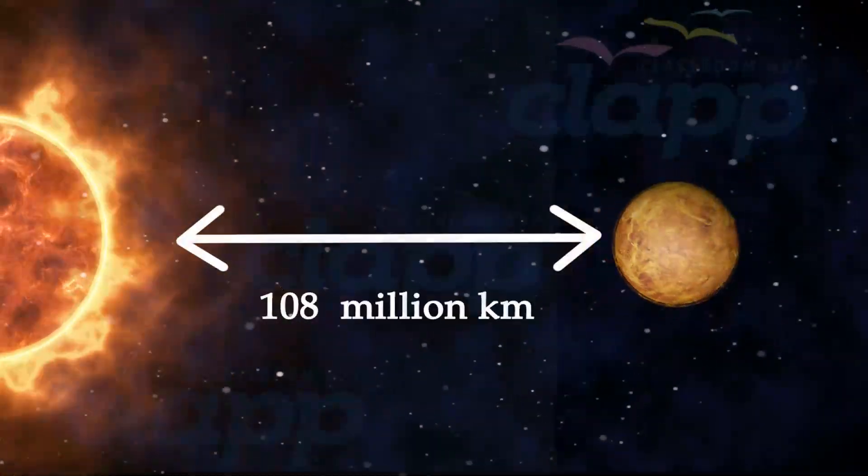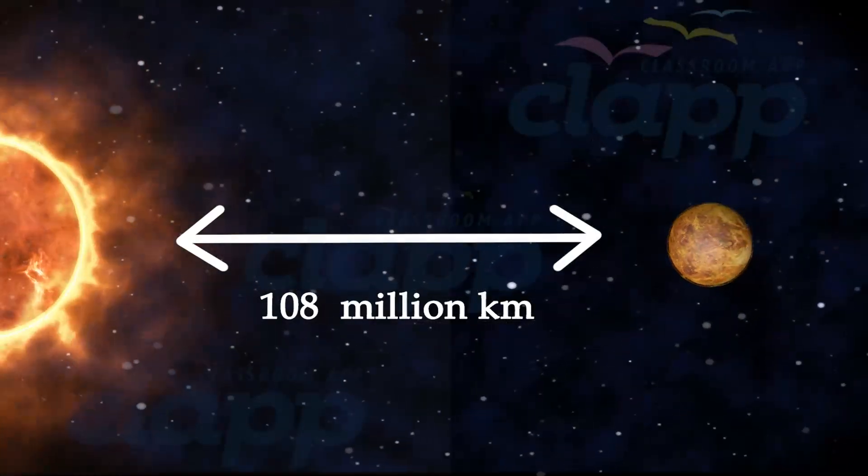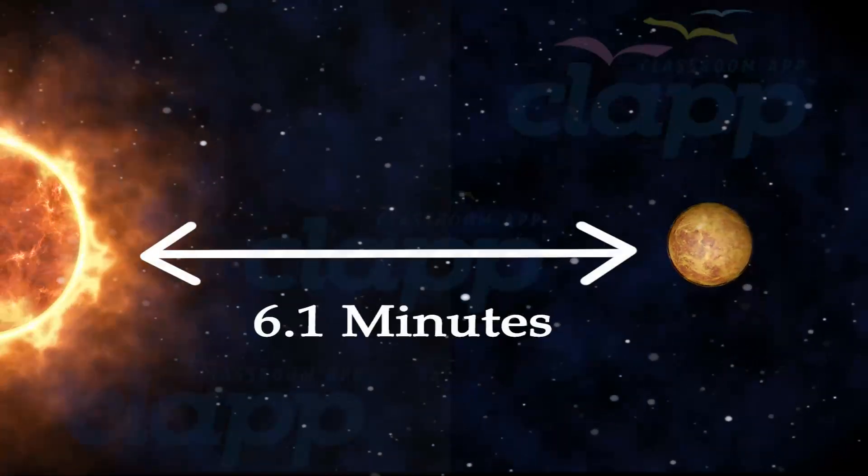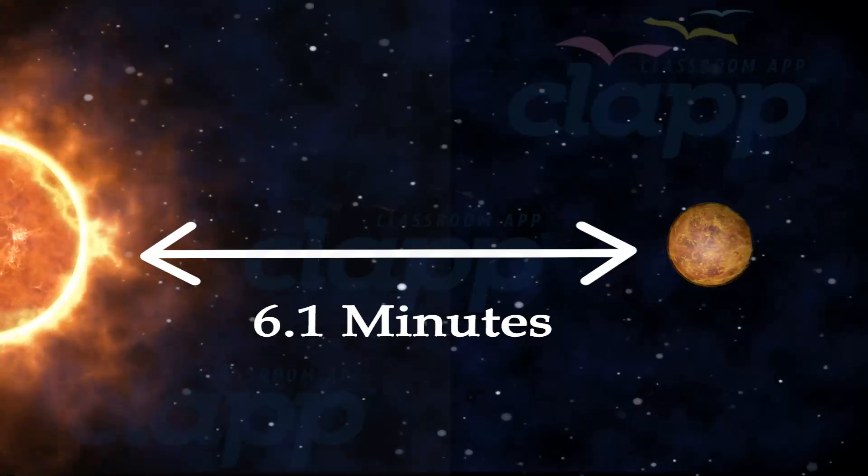Venus is an average distance of 108 million km away from the Sun. From this distance, it takes sunlight 6.1 minutes to travel from the Sun to Venus.